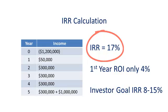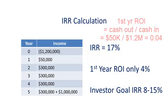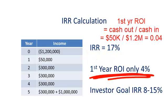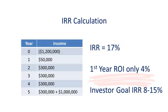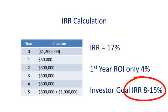But if we just calculated the first year cash-on-cash ROI, then we get ROI equals 4%. If we try to sell a 4% ROI to investor partners, they'll laugh us out of the building. But the true multi-year IRR of 17% is something they would easily consider, because most savvy, accredited, and institutional investors look for IRRs in the range of 8-15%.